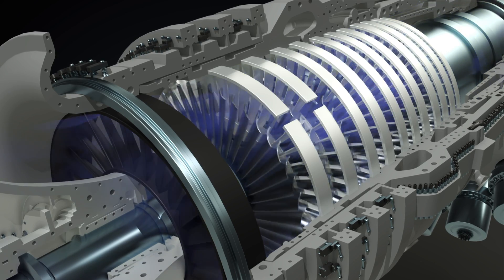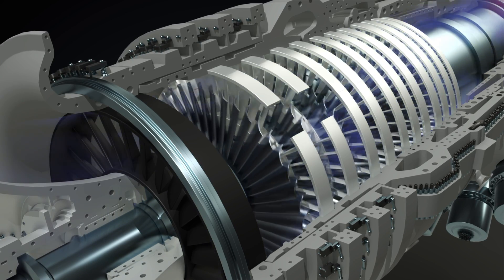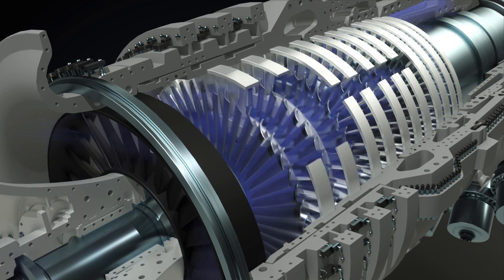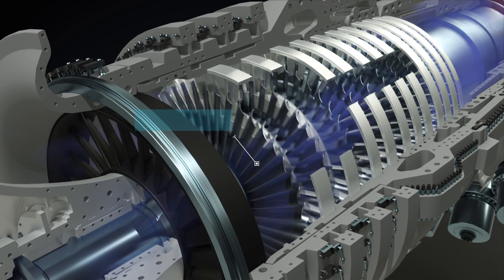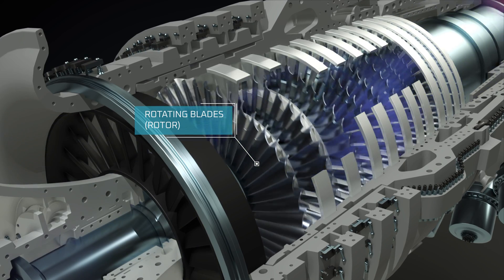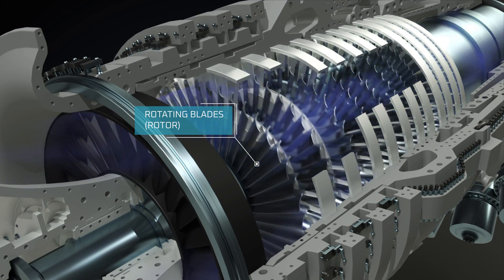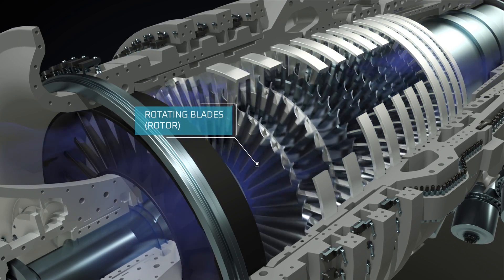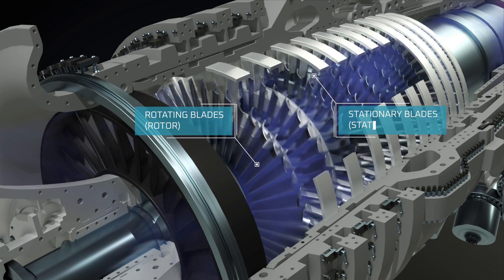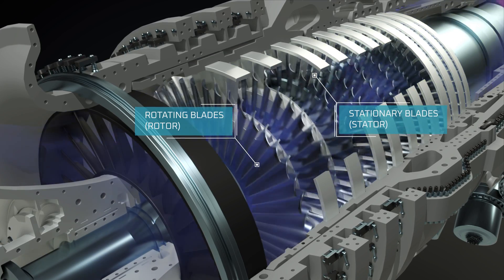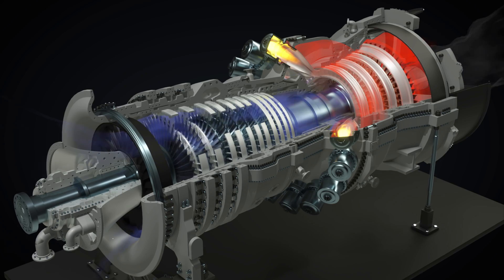Compression increases the pressure and temperature of the air, preparing it for combustion. The rotating blades accelerate the air, increasing its velocity and kinetic energy. The stationary blades then convert some of that kinetic energy into pressure.